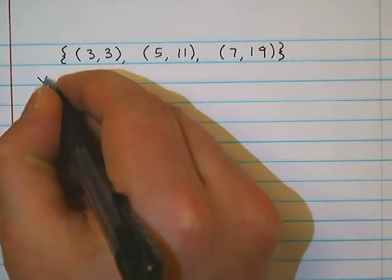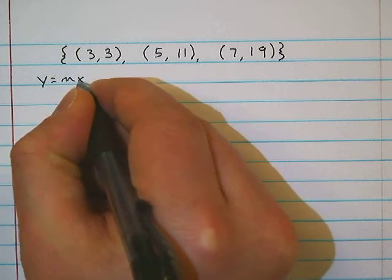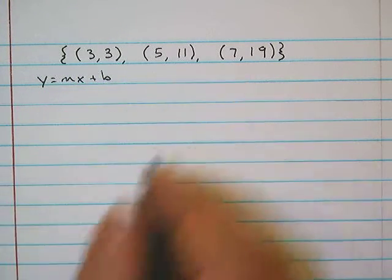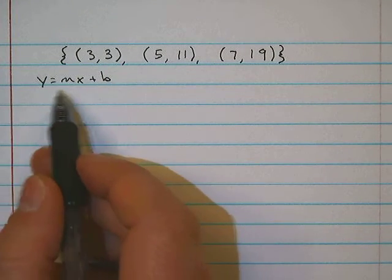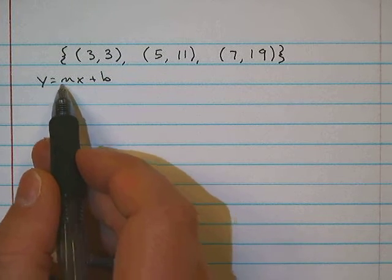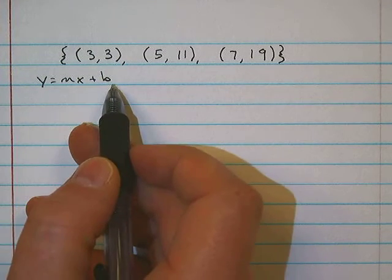So again, our goal is to find y equals mx plus b. Now, if you recall, whenever we were trying to find one of these equations, the only variables that actually change for us right now is the m and the b. We want to find the slope and the y-intercept.